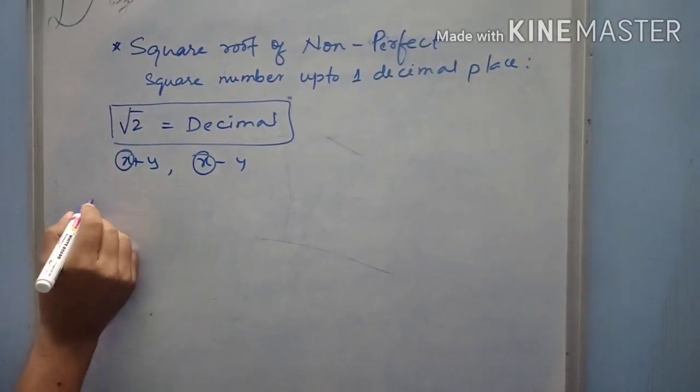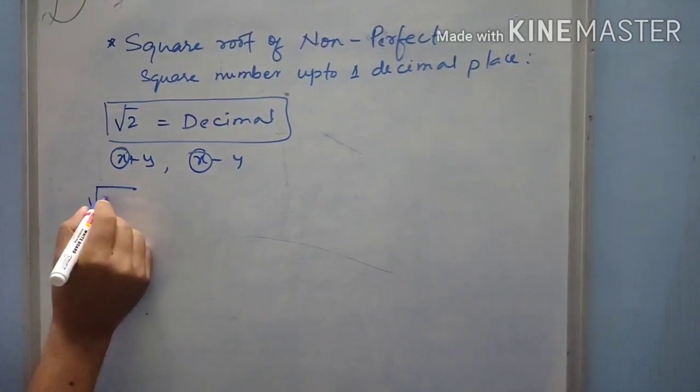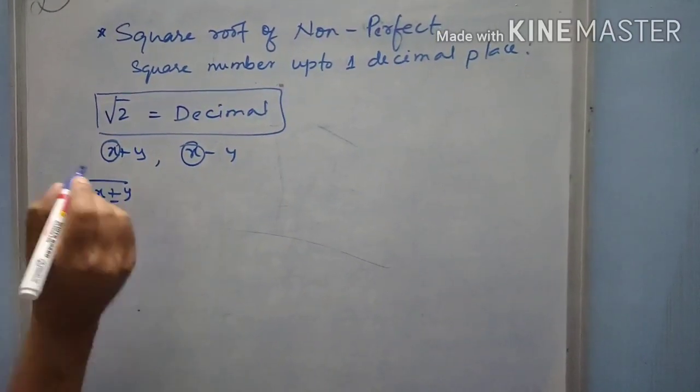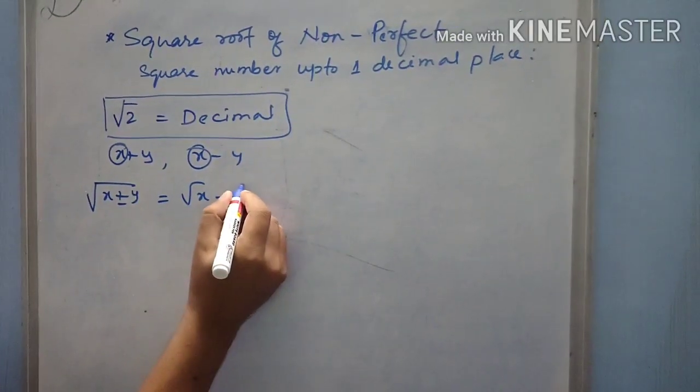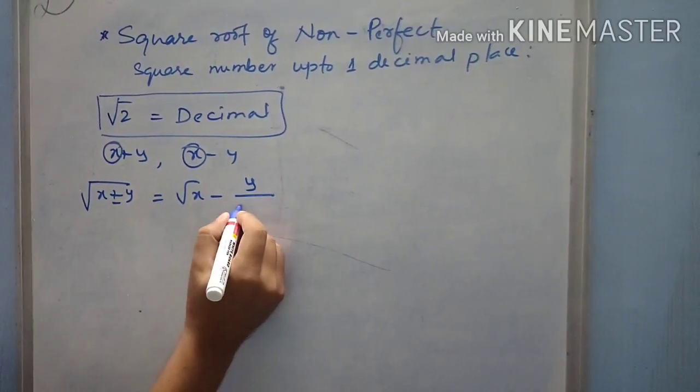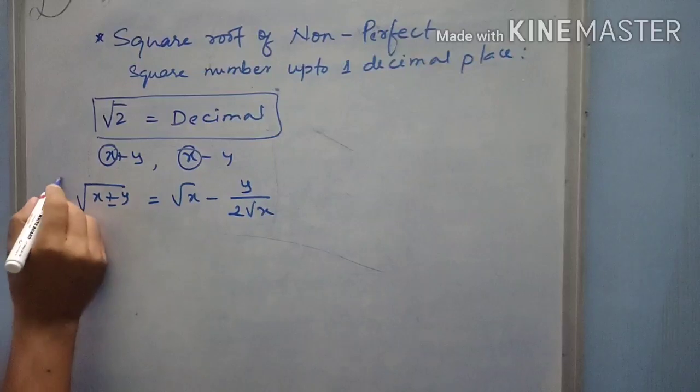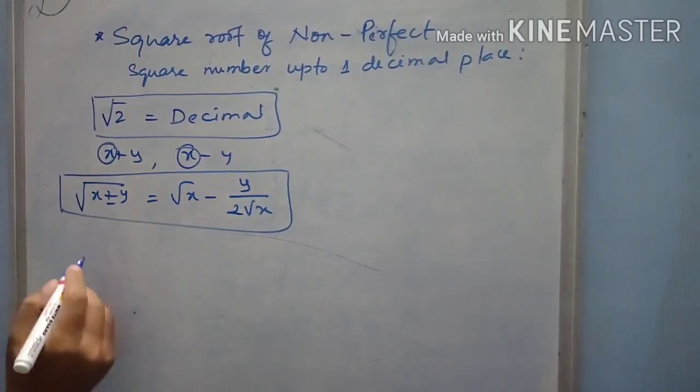Let us see the example now. Suppose now the given number I write in the form of x plus y or x minus y, the formula will be root x minus y by 2 root x. So, this formula you are going to apply.